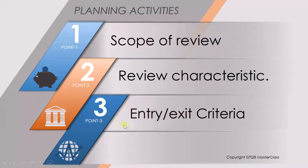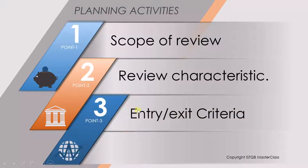The third point is the entry and the exit criteria — when the review process will start and when we have to complete the review activity. So these are the things which we have to consider: scope of the review, characteristics of the review, and entry and exit criteria.